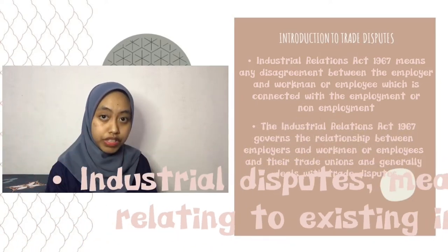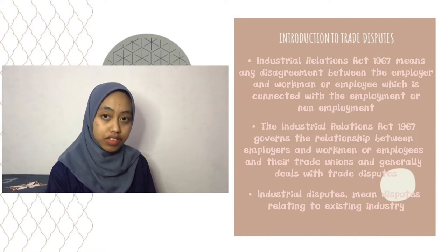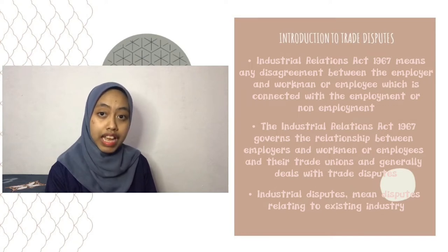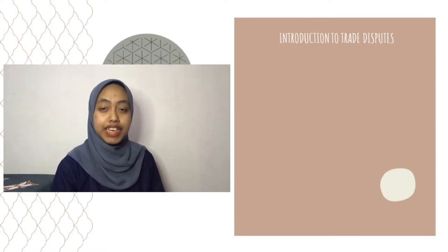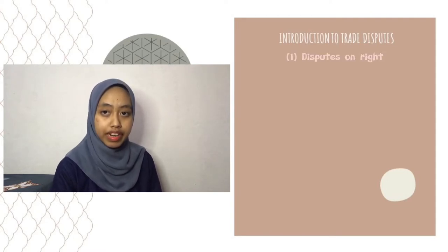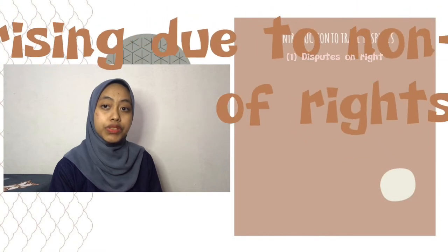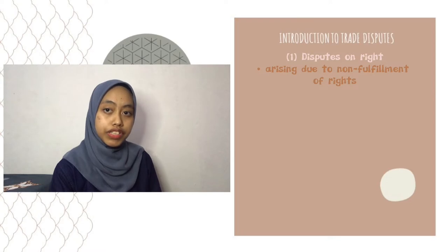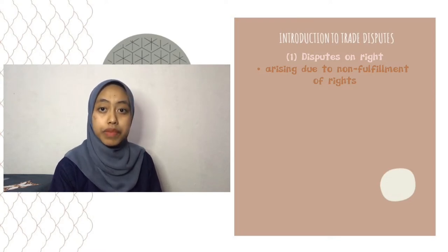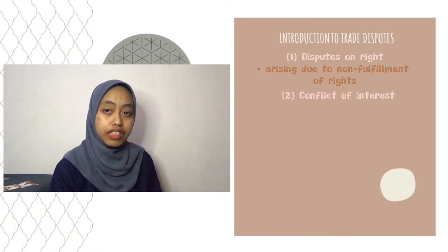Industrial disputes means any disputes relating to an existing industry. It must be a real dispute, and the person regarding whom the dispute is raised and the parties to a dispute must have a direct or substantial interest. There are four types of trade disputes in industrial relations. The first is disputes on right — a dispute arising due to non-fulfillment of rights because of differences in the application and interpretation of provisions of legislation, agreements, company regulations, or cooperative agreements.